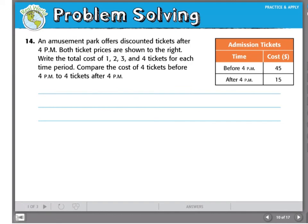Finally, this is the practice problem you will be solving. An amusement park offers discounted tickets after 4 p.m. Both ticket prices are shown to the right in the table. Write the total cost of one, two, three, and four tickets for each time period. Compare the cost of four tickets before 4 p.m. and four tickets after 4 p.m.